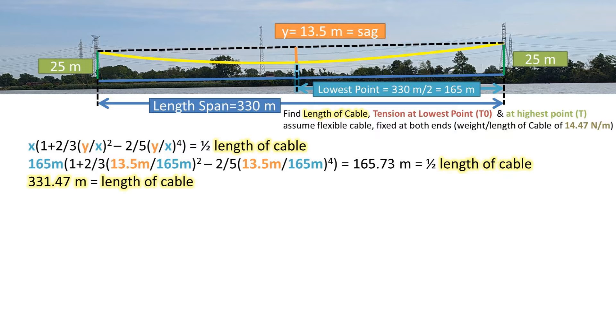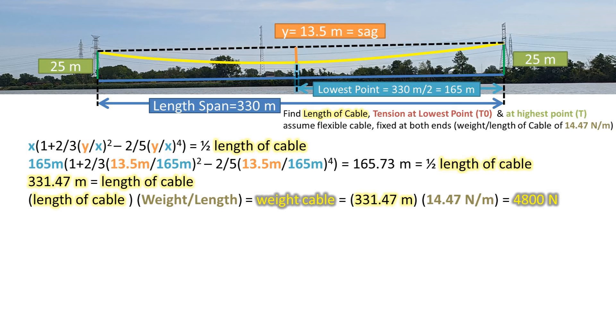This is interesting how 13.5 meters of sag only requires 1.47 meters of length. Now we need to get the weight of the cable. We can take the length we just found and multiply times the weight per unit of length. We get a cable weight of 4,800 newtons with some rounding.